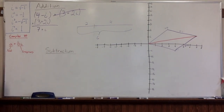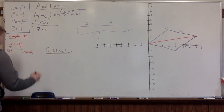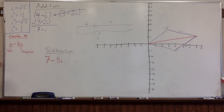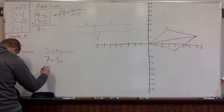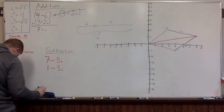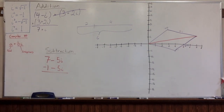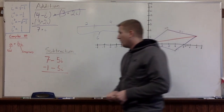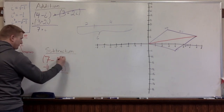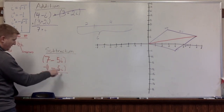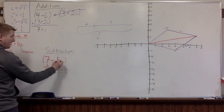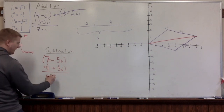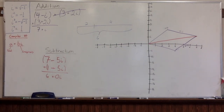Let's move on to subtraction. We have 7 minus 5i, and we're going to subtract 1 minus 5i. Just like addition, subtraction works the same way — we subtract the real parts and subtract the imaginary parts. So 7 minus 1 gives us 6. Then negative 5i minus negative 5i is really negative 5i plus 5i, which gives us 0i. Easy enough.